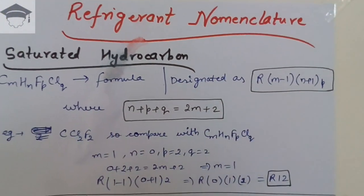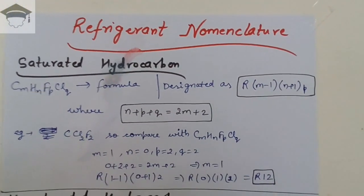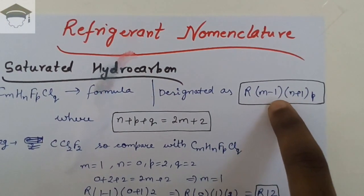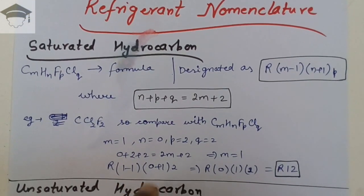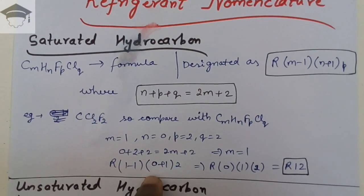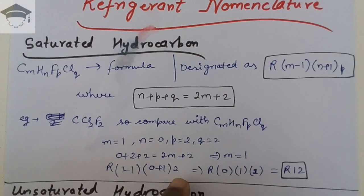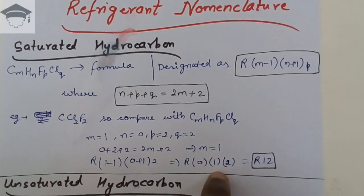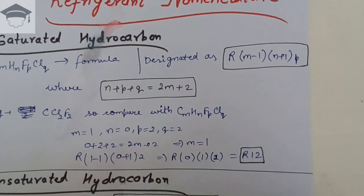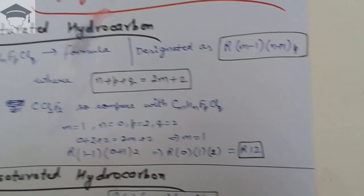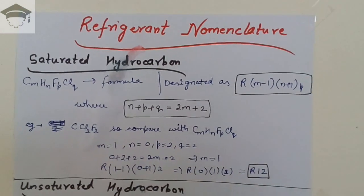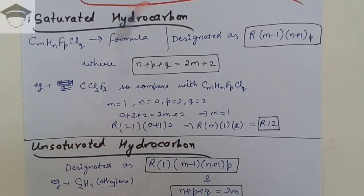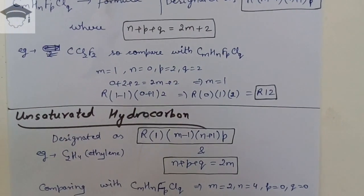The refrigerant is designated as R(m−1)(n+1)(p). With m = 1: m − 1 = 0. With n = 0: n + 1 = 1. And p = 2. So we get R(0)(1)(2). The leading zero is eliminated, giving us R12. Therefore, CCl2F2 is commercially known as R12.